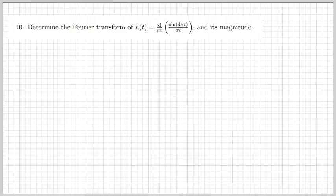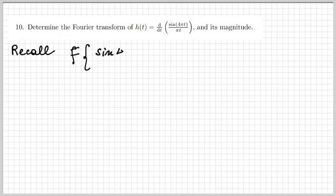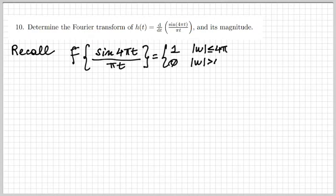The first exercise for today is about determining the Fourier transform of a certain signal h of t, which is defined as the derivative of some other signal. And then we see that this other signal is actually a sinc function. So let's recall what the Fourier transform of a sinc function is — it is a rectangular pulse.